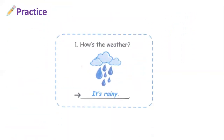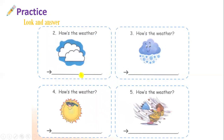Next one — you will look and answer the question. Question number one: how's the weather? Chúng ta sẽ trả lời ở đây thời tiết là dạng thời tiết có mưa, và câu trả lời sẽ là it's rainy. How's the weather? It's rainy. Next one, number two to number five, you will have 30 seconds to see.